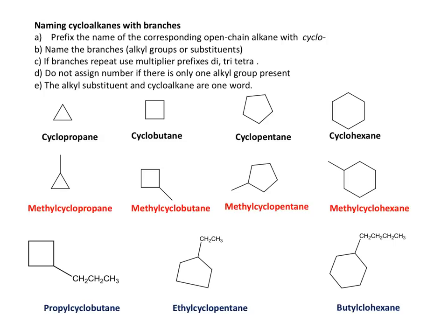To name a cycloalkane, we look at how many carbons are present within the cycloalkane. If it's three carbons, that will be cyclopropane; four carbons is cyclobutane; five carbons is cyclopentane; and six carbons is cyclohexane.